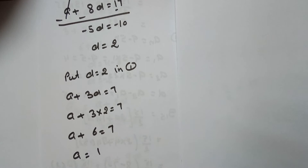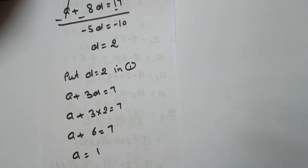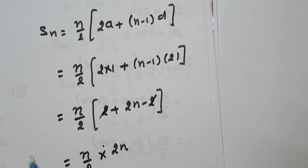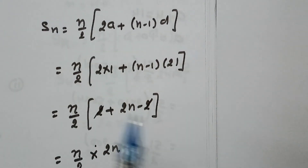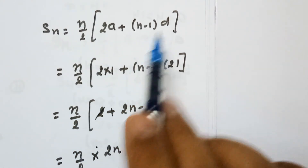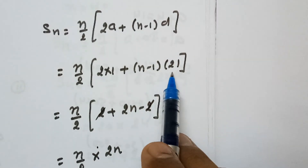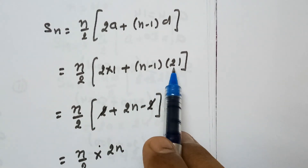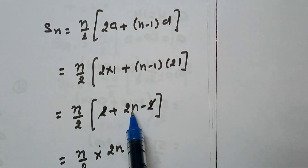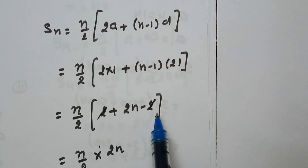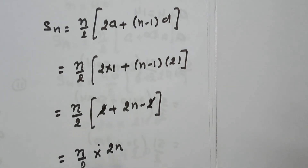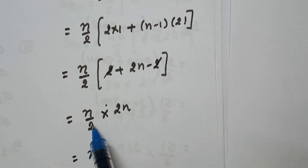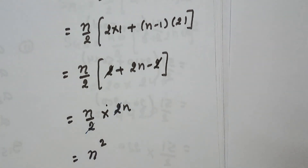Now A is 1 and D equals to 2. We need to find the sum of N terms, so we use the formula Sn equals to N by 2 into 2A plus N minus 1 into D. Substituting A equals to 1 and D equals to 2: 2 into 1 is 2, and expanding gives 2N minus 2. So 2 and minus 2 cancel each other, leaving 2N. The 2 in the numerator cancels with 2 in the denominator, so we are left with N into N equals to N squared. Therefore, the sum of N terms is N squared.